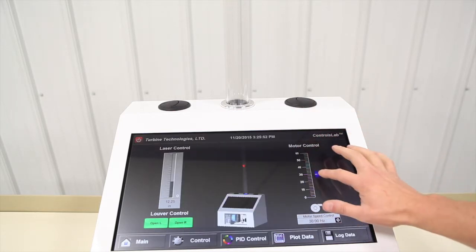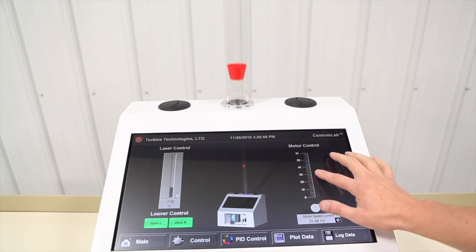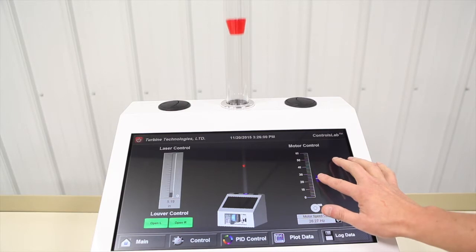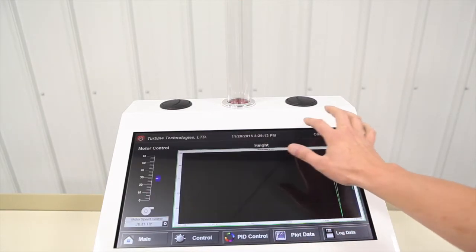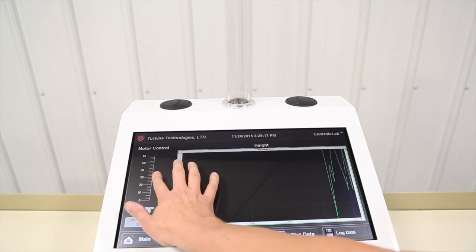In operator mode, students start off by learning how to control the position of the float manually and discover how difficult this is to accomplish, especially when the system experiences disruptions in air flow. They can graphically record their efforts in real time to see how well they can manually hold the set point and recover from disruptions.